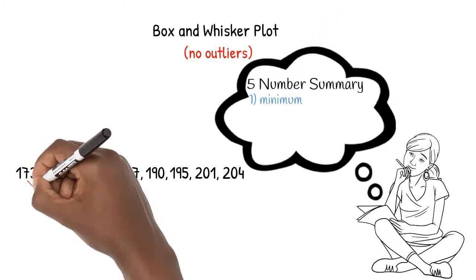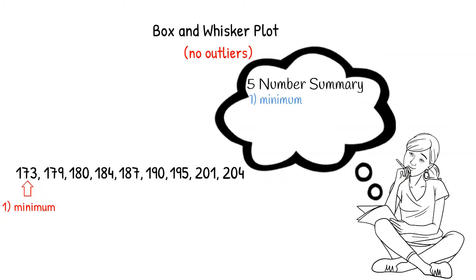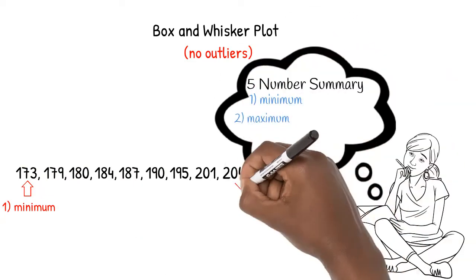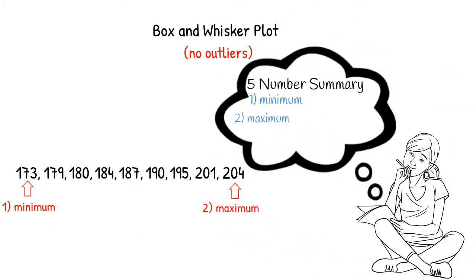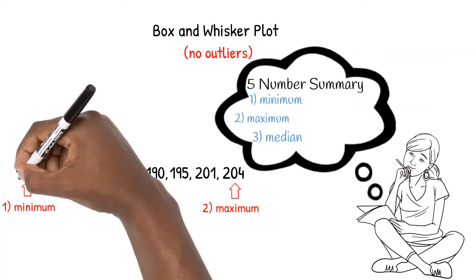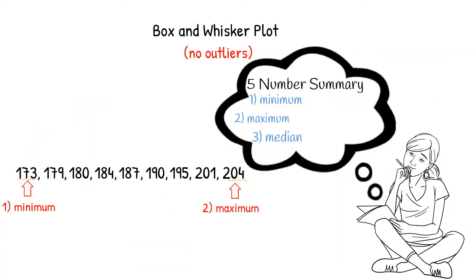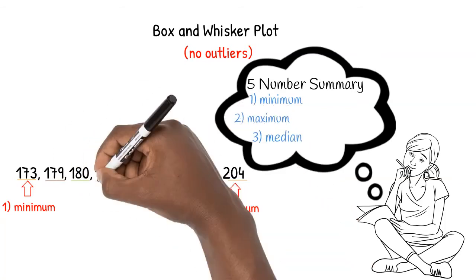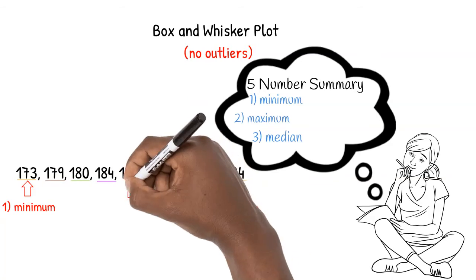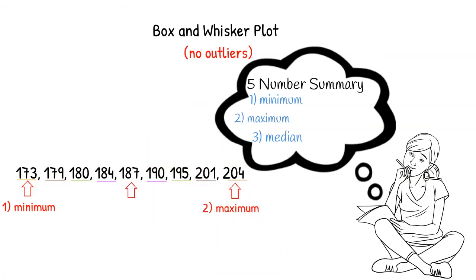First, we determined the minimum, the smallest number in the list. Then we determined the maximum, the largest number. After making sure our numbers were listed in size order, we then eliminated pairs of numbers, starting first with the smallest and the largest, then moving inwards until we found the middle number, the median.